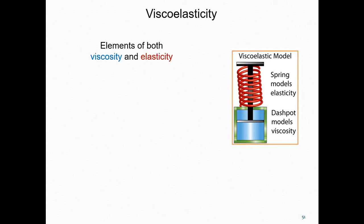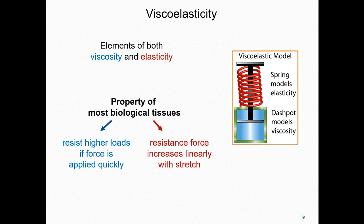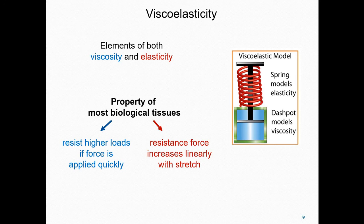If someone describes a material or tissue in the body as viscoelastic, it means that material has both viscous properties and elastic properties. Most biological tissues are best characterized as being viscoelastic — they are elastic in that the resistance forces increase linearly with how much the tissue is stretched, and they're also viscous in that the tissues will resist higher forces if the force is applied quickly. Viscosity is a property that's often mistakenly overlooked in thinking about the function of tissues — for example, tissues are often tested only at one speed.